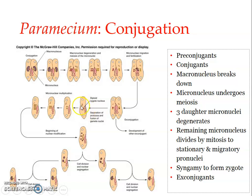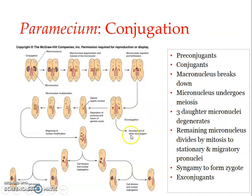The two paired paramecia remain joined together for approximately 12 to 48 hours. Once the diploid zygote nucleus is formed, the pair separates. After separation, the two individuals are referred to as ex-conjugants.